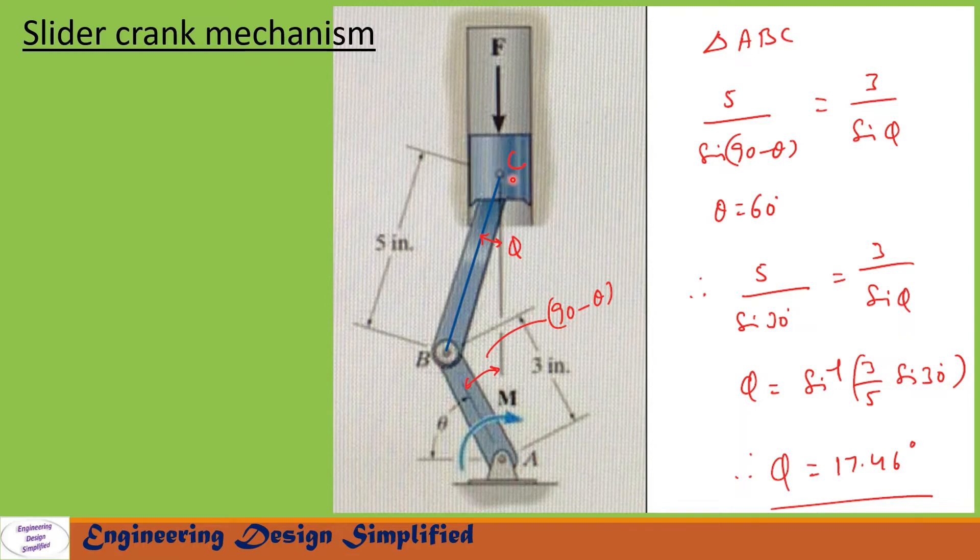In this triangle ABC, let us apply sine rule: 5 by sine(90 - theta) equal to 3 by sine(phi). The angle theta is given as 60 degrees, so after substituting theta and simplification, we get phi equal to 17.46 degrees.